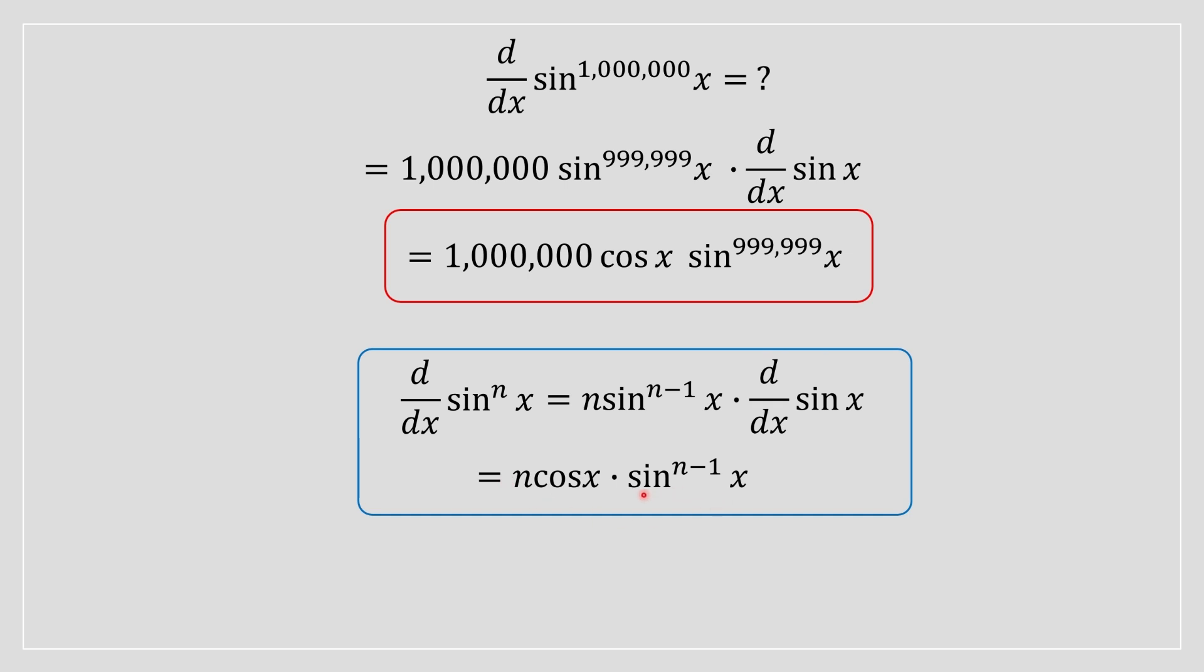You substitute any number here, basically. Let's say if it was five, you would put a five over here, then you do five minus one, which is four, and it'd be sine to the power of four. You can have any n term, this is basically valid for any n term. So that's the idea for this.